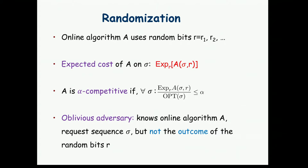We can also use randomization. The algorithm uses random bits, and we look at the expected performance for every request sequence, where the expectation is taken over the random bits used by the algorithm. For a randomized algorithm, it is alpha-competitive if the ratio between the expectation and the optimal cost is at most alpha. In these talks, I'm only going to assume that the adversary is oblivious — meaning the adversary knows the algorithm, but not the outcome of the random bits.